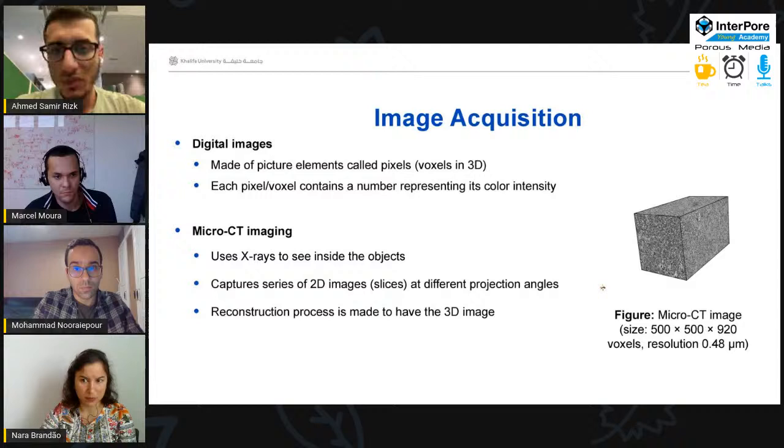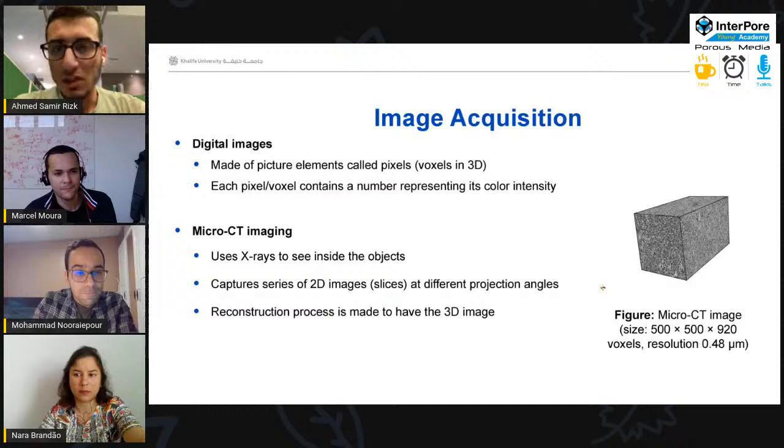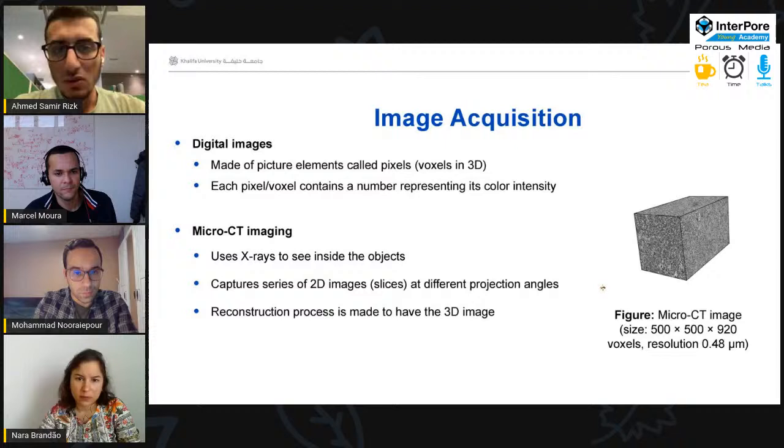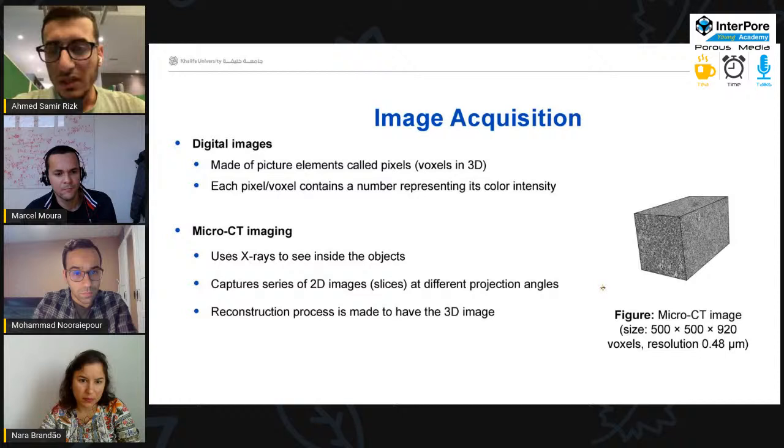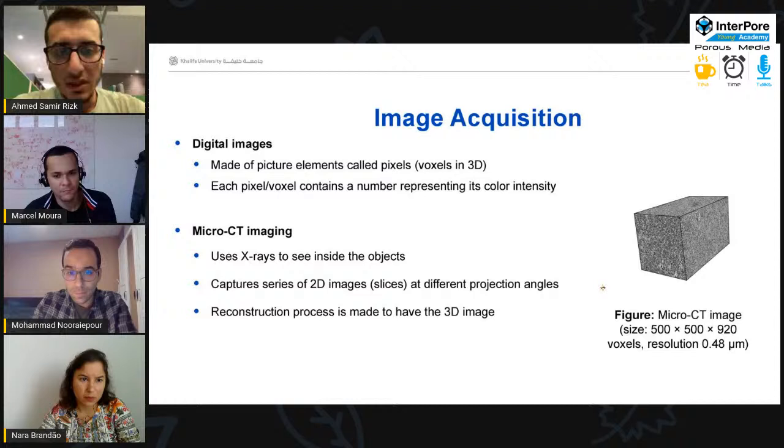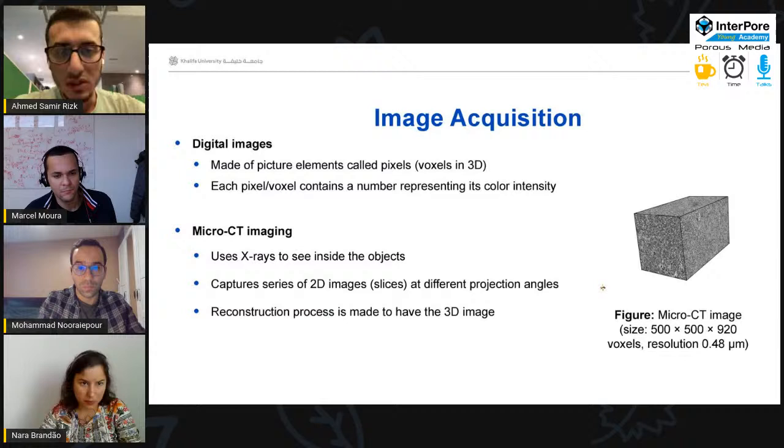To start through the workflow, we first should know what is the digital image, which is a building block of this research. The digital image is made of picture elements called pixels or voxels in 3D, and this pixel or voxel contains a number that represents its color intensity. And we use the micro-CT imaging technique. This technique uses X-rays to see inside the objects. It captures a series of 2D slices at different projection angles, then they stack them together to obtain the 3D image. The sample which we are working on here is a carbonate rock sample that was captured at a resolution of 0.48 micrometer, which is a very high resolution.